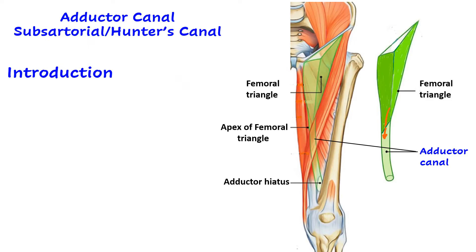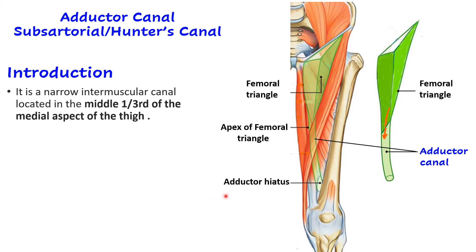You always begin your answer with an introduction. Adductor canal is a narrow intermuscular canal — intermuscular meaning its boundaries are formed by muscles. As the name suggests, the adductor compartment of the thigh is on the medial side, so the canal is located on the medial aspect of the thigh, specifically in the middle one third.